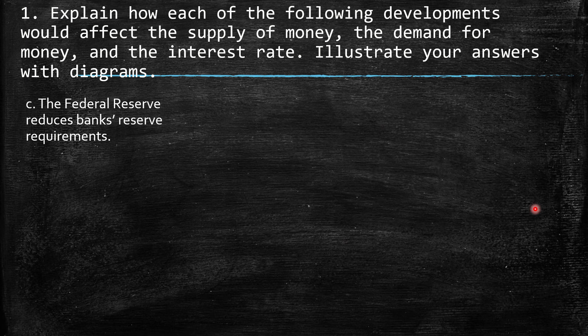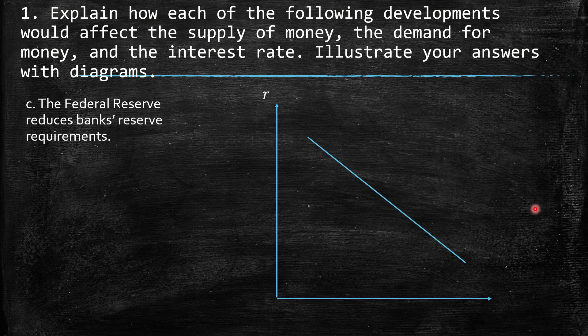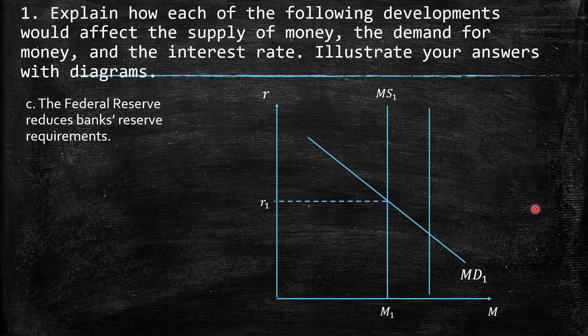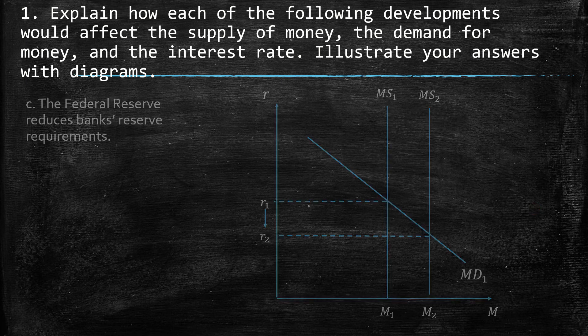c. The Federal Reserve reduces banks' reserve requirement. Banks then have more money available to lend out because of this relaxation of the restriction. As a consequence, we have an increase in the quantity of money in the market — it's an expansionary policy. We face a lower interest rate and more money in the market.